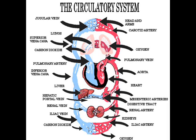All parts of the system have to function independently so they can all work together. Everyone needs circulation, and good circulation, for life to continue. Think of the circulatory system as a circle. As the blood moves around that circle, it collects new oxygen and disposes of wastes.